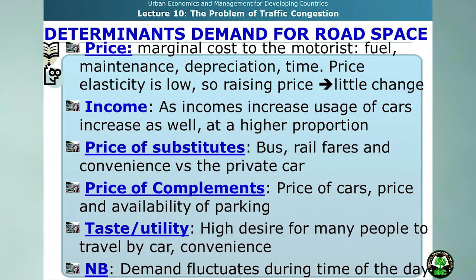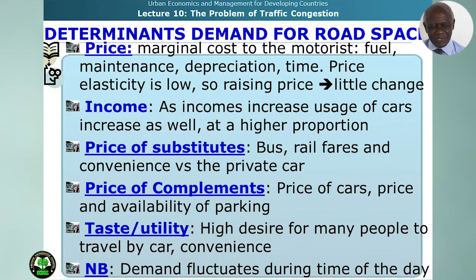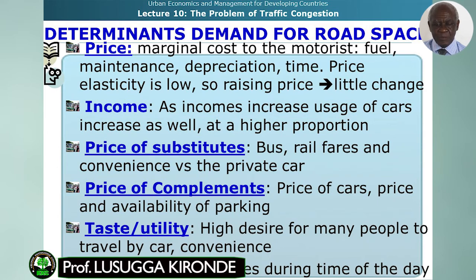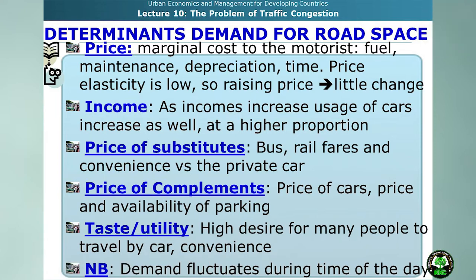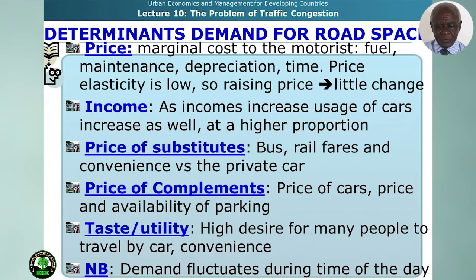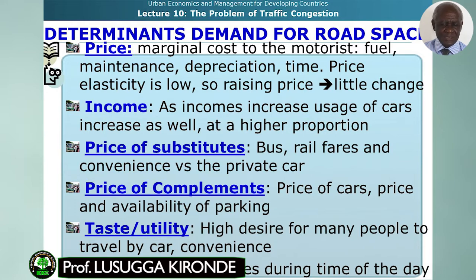What are the determinants of demand for road space? First, price — the marginal cost for the motorist, that is fuel, maintenance, depreciation, and time. Price elasticity is low, so raising the price brings very little change. Second, income — as incomes increase, car usage increases even at a higher proportion. Third, the price of substitutes — bus fares, rail fares, and convenience compared to the private car. Fourth, the price of complements — the price of cars and the price and availability of parking, with car prices falling in developing countries. Fifth, taste — there is a high desire to travel by car for its convenience. Demand also fluctuates at certain times of day.